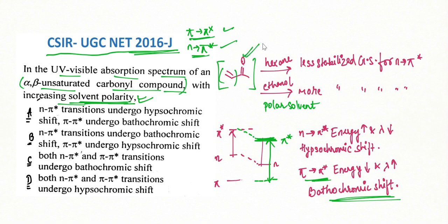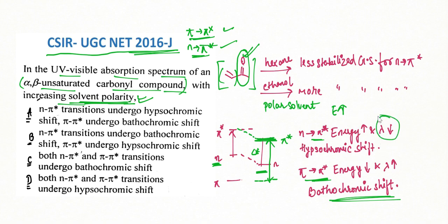For the n→π* transition of the carbonyl group, the ground state (the lone pair, non-bonding state) is itself very polar, so it is stabilized much more by the polar solvent than the π* excited state. Therefore, the n energy level comes down much more than the π* level, the energy gap increases, the wavelength of the n→π* transition decreases, and a hypsochromic shift occurs. So option A is correct: n→π* undergoes hypsochromic shift, and π→π* undergoes bathochromic shift.